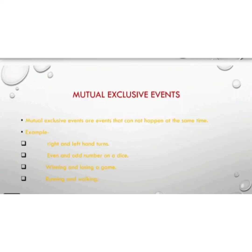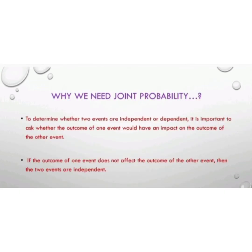Mutually exclusive events are events that cannot happen at the same time. For example, right and left hand turns, even and odd numbers on a dice, winning and losing a game, and running and walking are all mutually exclusive events.